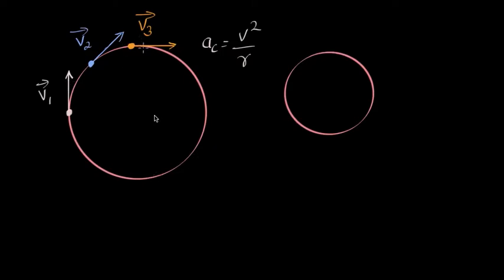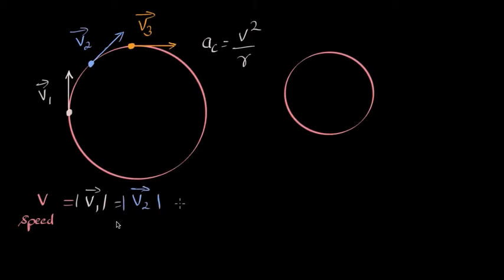The speed is constant. You can say the magnitude of v1, magnitude of v2, magnitude of v3 — all are constant. This is the center and the radius r.